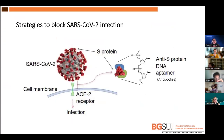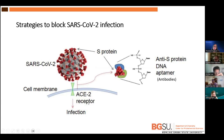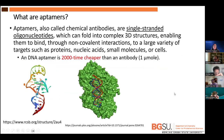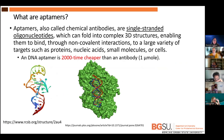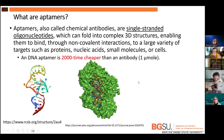Many labs in industry and academia design tools to bind into the spike protein — for example, antibodies — to prevent it from binding to the human receptor. In my lab, we design DNA-based aptamers that bind to the spike protein. Aptamers are single-stranded oligonucleotides — single-stranded DNA or RNA — that can form complex 3D structures enabling them to recognize different targets. One significant advantage of DNA aptamers is their very low cost: compared with antibodies, they could be 2,000 times cheaper. So if we can have such a low-cost tool that binds to the spike protein, we can have a very useful tool.